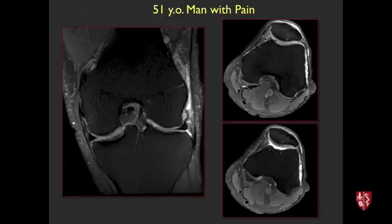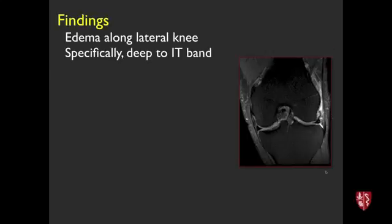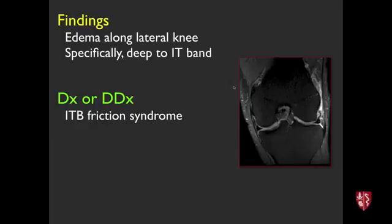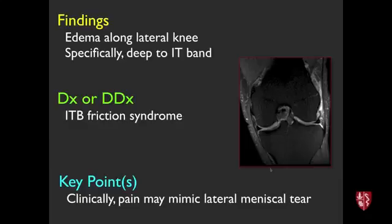Next case, 51-year-old man with pain. On MRI there's edema along the lateral aspect of the knee, deep to the iliotibial band. This is the MR equivalent of iliotibial band friction syndrome — edema deep to, and possibly superficial to, the IT band. Key point: the symptoms can overlap with a lateral meniscal tear, so MRI is often done to rule out a meniscal tear rather than to diagnose IT band friction syndrome.